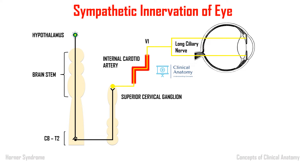Moving to the sympathetic innervation. To understand the clinical features of Horner's syndrome, you should completely understand the sympathetic innervation. Here you can see the hypothalamus, brain stem, and continuation of the spinal cord — the C8 to T2 segment. The first-order neuron starts from the hypothalamus, passes through the brain stem, and relays in the C8 to T2 segment of the spinal cord.